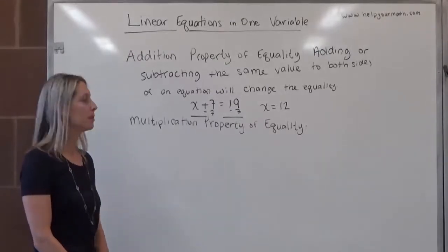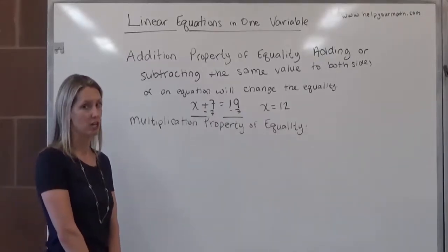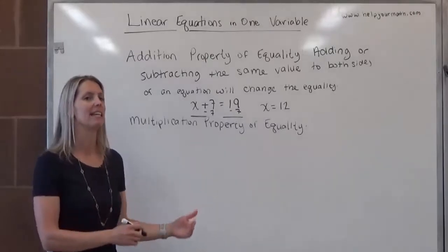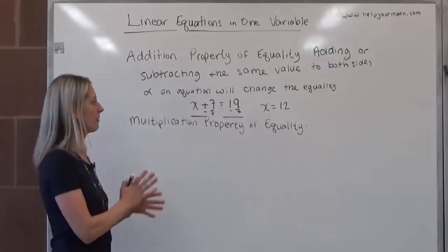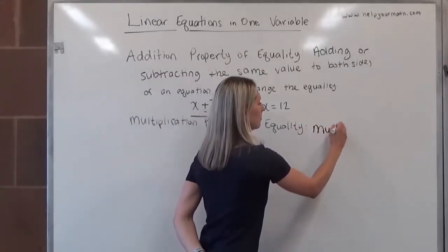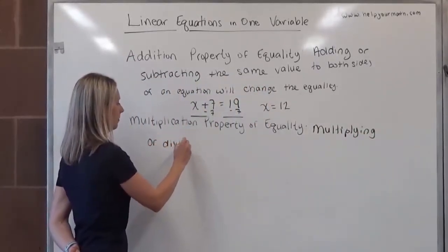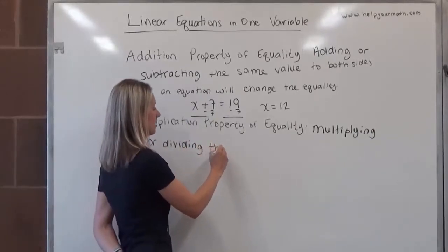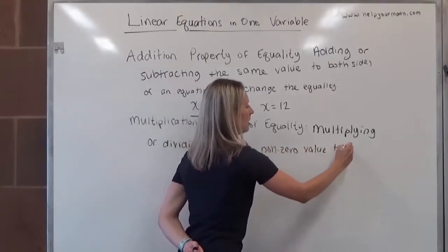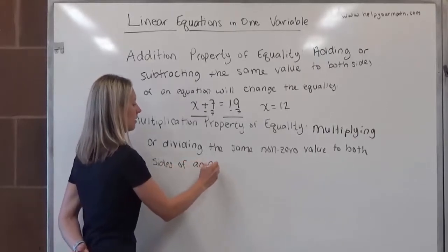That's the addition property of equality. Next, we have the multiplication property of equality. The multiplication property of equality states that if we multiply the same non-zero value to both sides, that it will not change the equality. And kind of like addition and subtraction, the same thing applies with multiplication and division. You can take any division and rewrite it as multiplication. So we don't have a division property of equality, it would just fall under the multiplication property of equality. So multiplication property of equality: multiplying or dividing the same non-zero value to both sides of an equation will not change the equality.